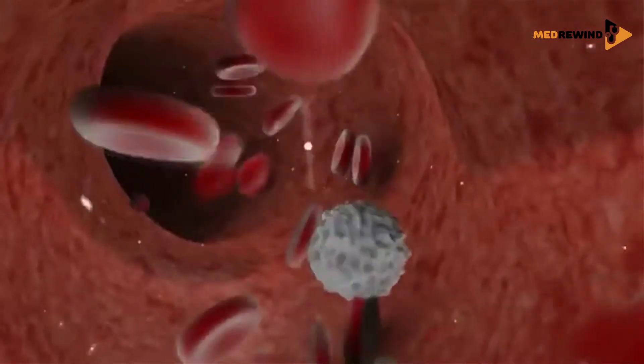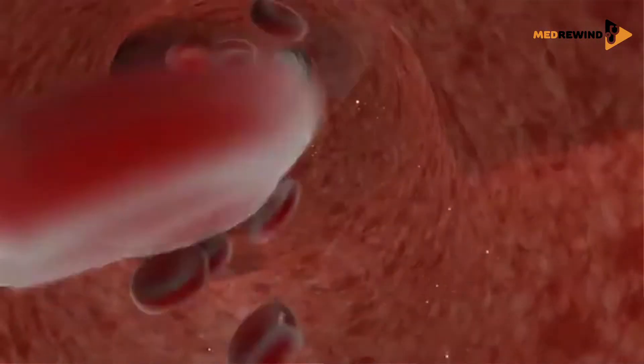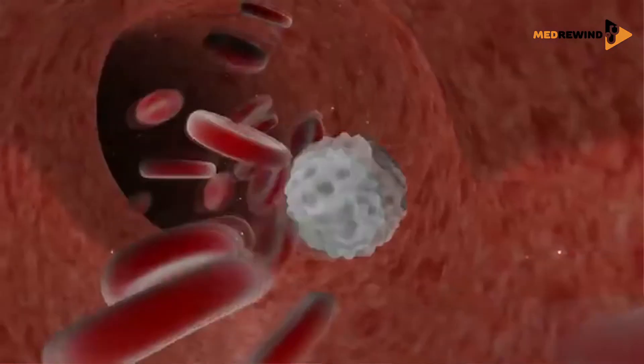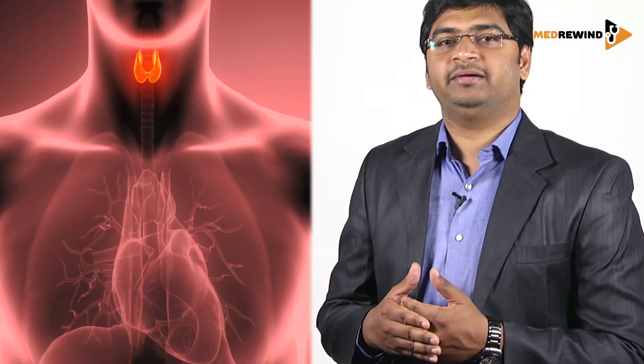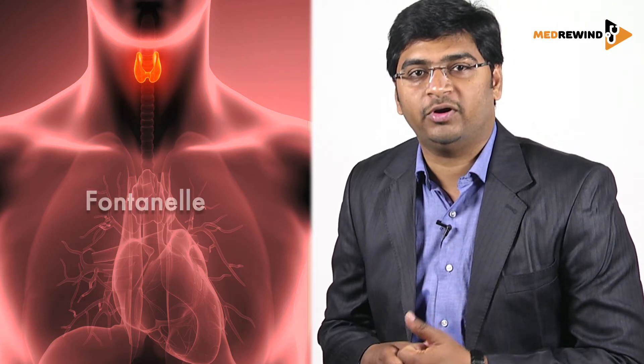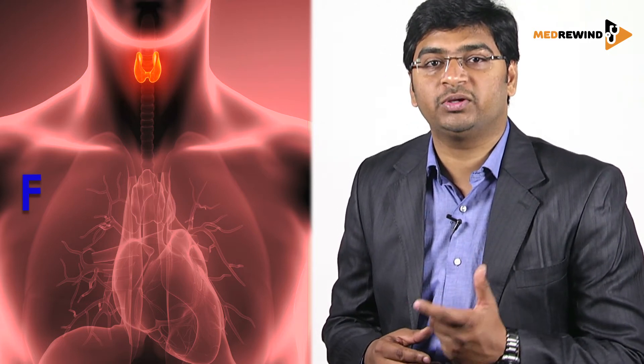Coming to the spread, it spreads by blood flow. So the F is for flow-dependent tumour, and when it is a flow-dependent tumour, the secondaries are found in the skull. This can be remembered by the word Fontanelle — Fontanelle has F, and this F is follicular carcinoma of thyroid.